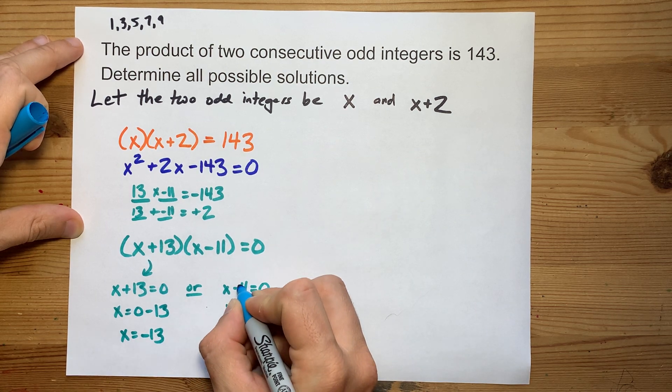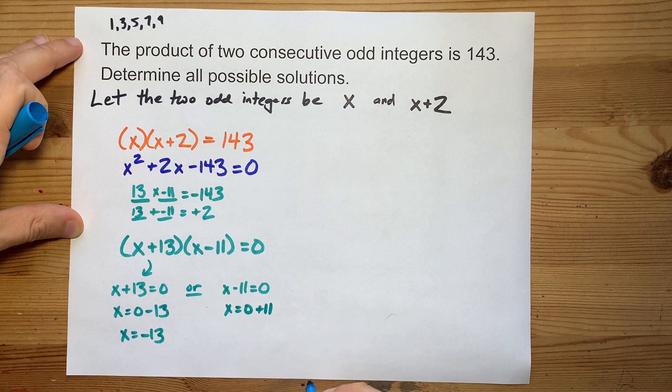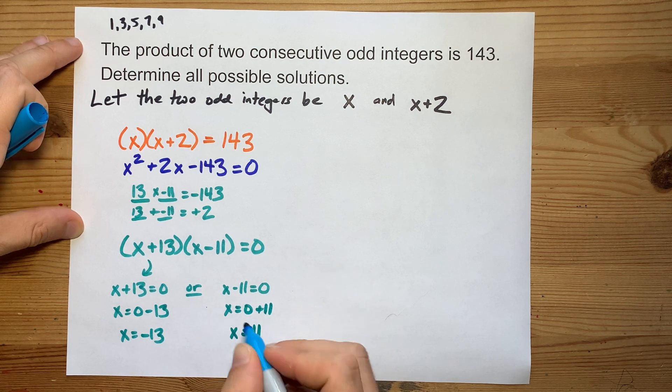Here, I could move the minus 11 to the other side. It becomes plus 11. x is 11. Okay, great.